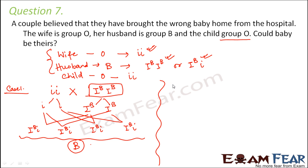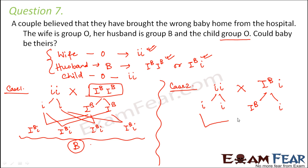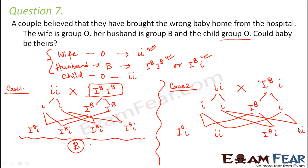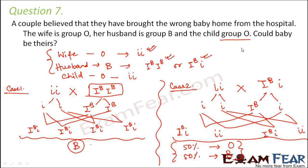Now there can be another scenario where the husband is heterozygous I^B i. In that case we cross the wife (ii) with the heterozygous husband. The wife contributes i; from the husband you can get I^B or i. So the possible combinations are: I^B i, ii, I^B i, and ii. That gives a 50% possibility that the blood group would be O and a 50% possibility that the blood group would be B. So there is a possibility the offspring can have blood group O.